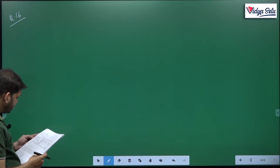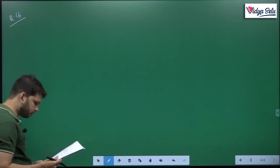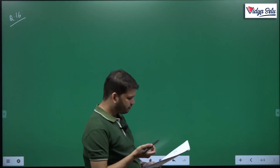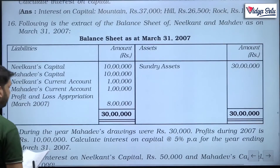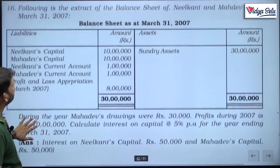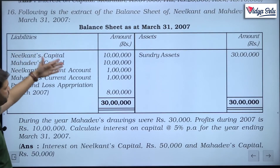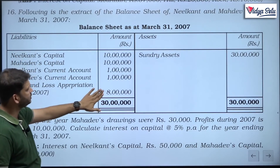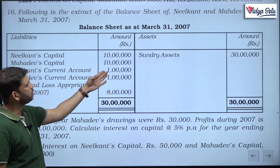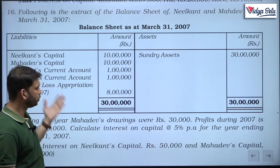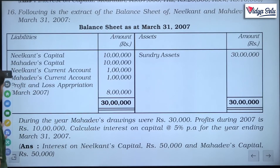Because the profit is undistributed, we will assume these are the opening balances — the question becomes very simple then. Nothing else is mentioned so we assume these to be the opening balances because the P&L appropriation balance is given separately and this is fixed capital. We know it is fixed capital because current account balances are given separately. So we just calculate interest on capital at 5 percent: 10 lakh × 5% and the other capital × 5 percent.